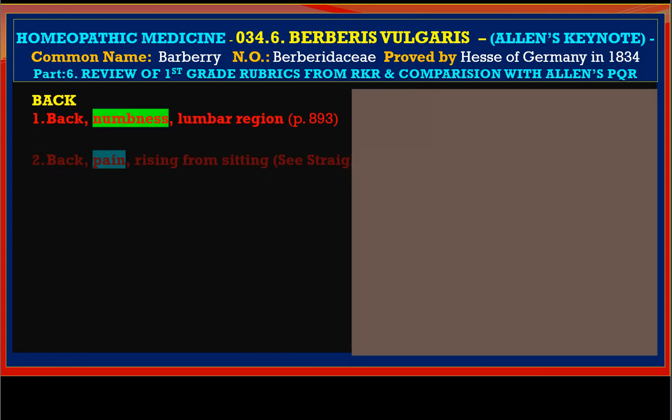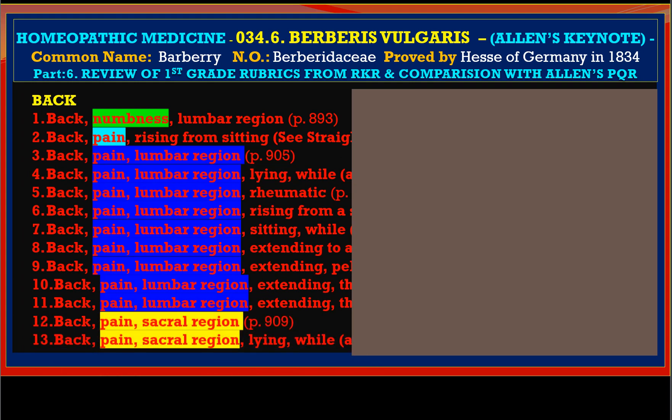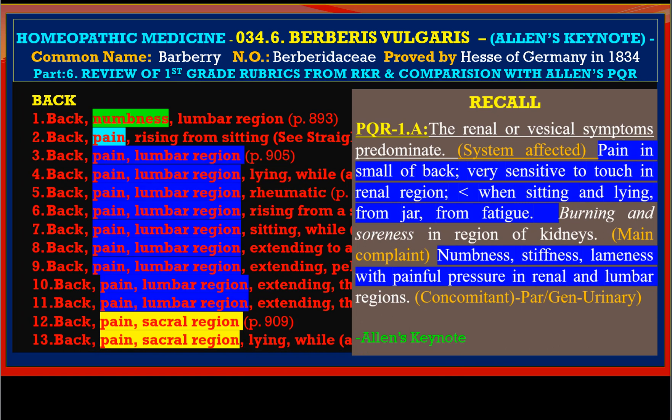In the back region we have not many symptoms: Somnus, pain in lumbar region — lying while, rheumatic, rising from, sitting while, extending to. We find pain sacral region also, with first grade remedy representation. In Allen's keynote we find PQR1A: pain in the lower back, very sensitive to touch in the renal region — worse sitting, lying, jar, fatigue. Numbness and stiffness, lameness with painful pressure in the renal and lumbar regions. These symptoms have been very profusely covered in not only Allen's but also in Kent Repertory.